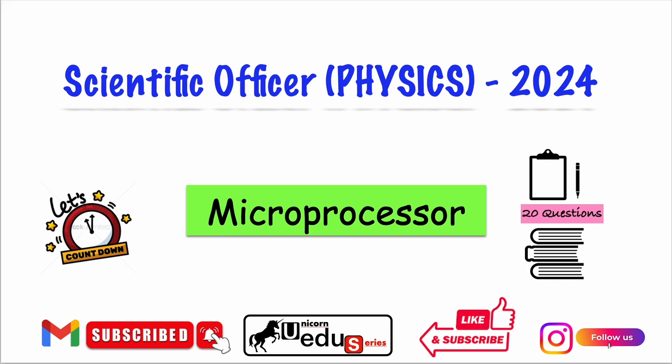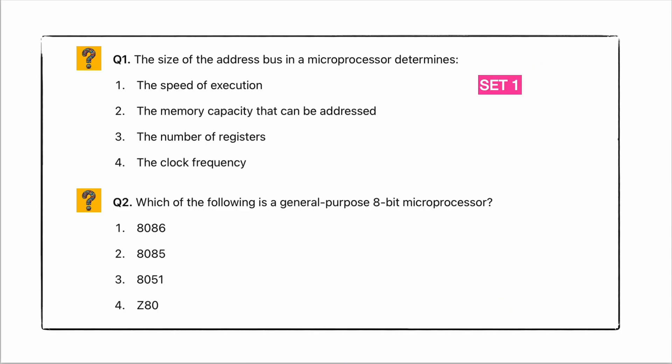We have to ask the question directly. The first question is: the size of the address bar in a microprocessor determines what? Options are provided. Question 1 - coming to the answer, option 1.